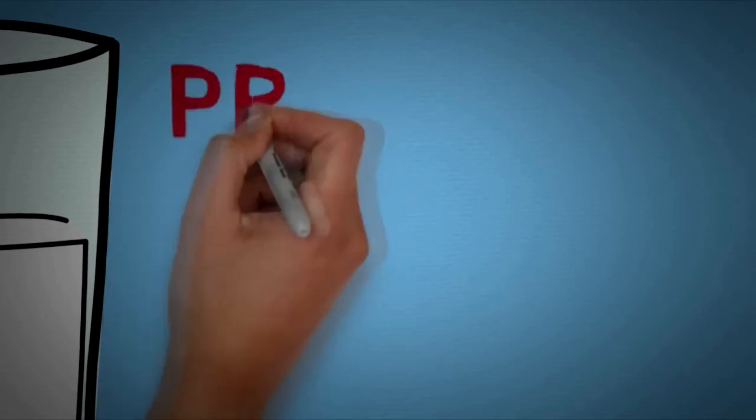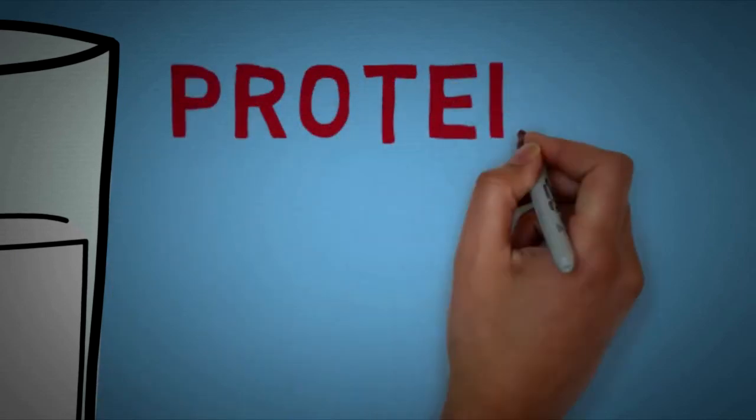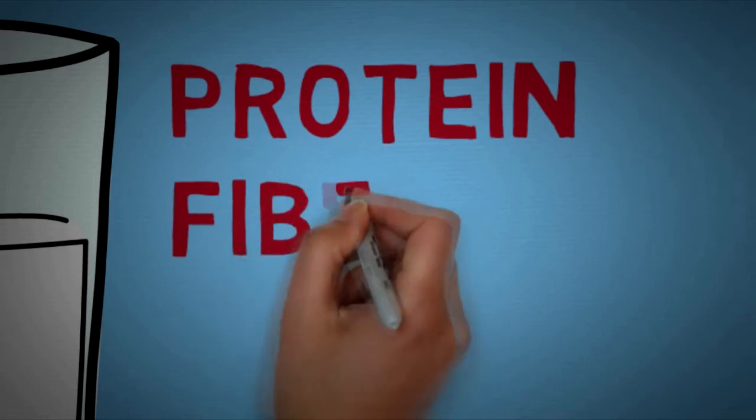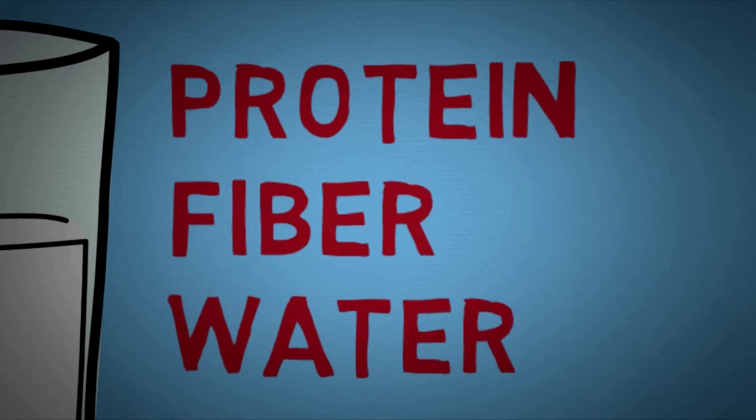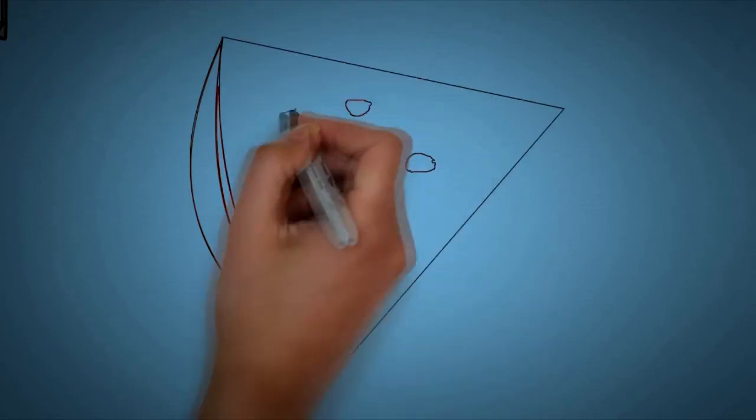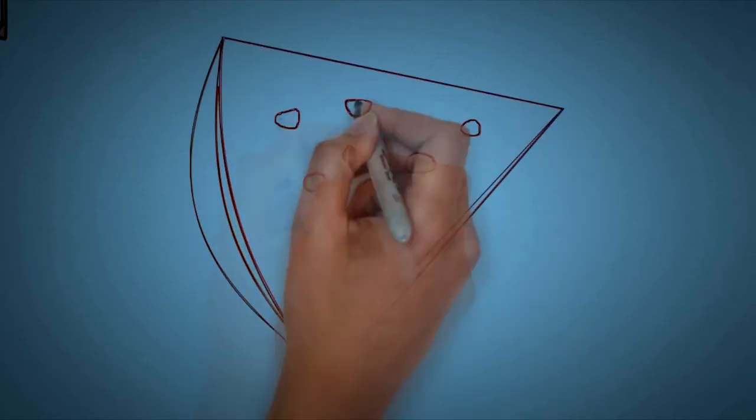But the better way to reduce appetite is by constructing a diet around these 3 factors. So make sure you have food in your diet consisting of protein, fiber and high amounts of water.